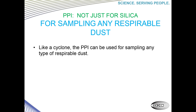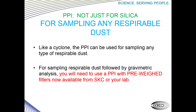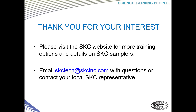PPI samplers are widely used for silica sampling, but like a cyclone, the PPI can be used for sampling any type of respirable dust. For sampling respirable dust followed by gravimetric analysis, you will need to use a PPI with a pre-weighed filter, which is now available from SKC or your laboratory. Thank you for taking the time to watch this webinar and learn about respirable dust sampling. Please visit the SKC website for more training materials and details on SKC samplers. You can email skctech@skcinc.com to get your questions answered by the SKC technical team in Pennsylvania, or contact your local SKC representative.